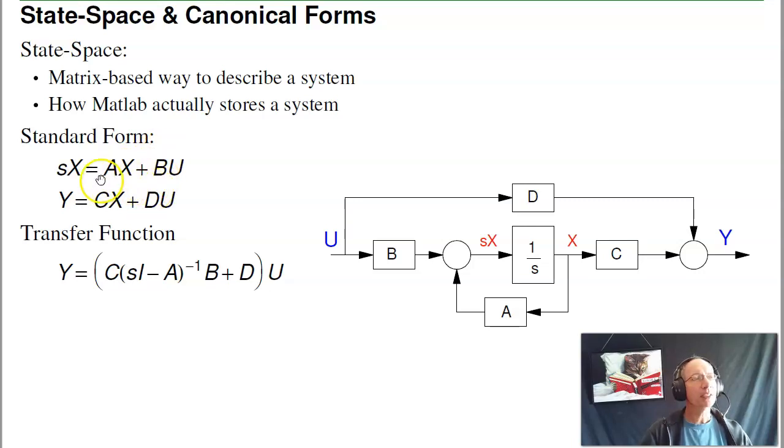In state space, the standard form is x dot equals Ax plus Bu, y equals Cx plus Du. x are the energy states: the voltages on capacitors, current through inductors, the position of the mass for potential energy, velocity, kinetic energy. That's one way to define x. Once you define x, I know the energy in the system.